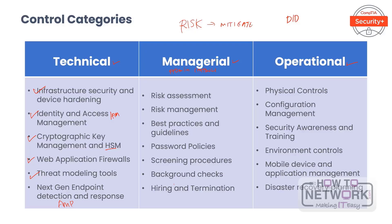Managerial controls would include things like how your company does risk assessment and risk management, your best practices and guidelines, your password policies, and the procedures you go through for screening — background checks, hiring, and termination. It could also include dual operator principles, mandatory vacations, and training and awareness programs.